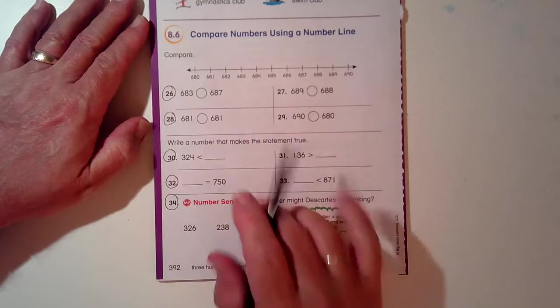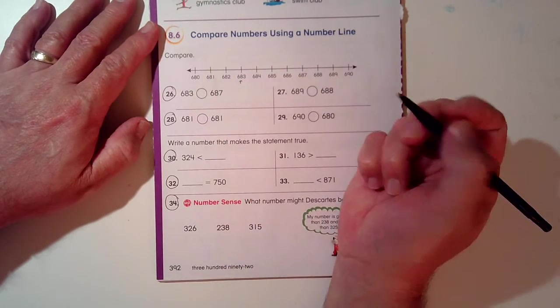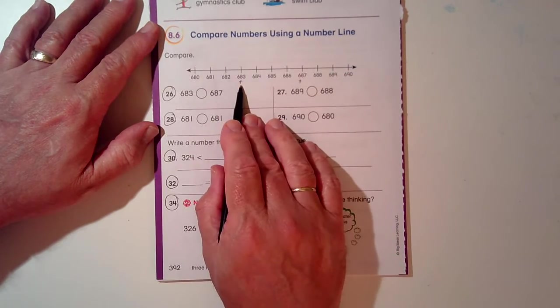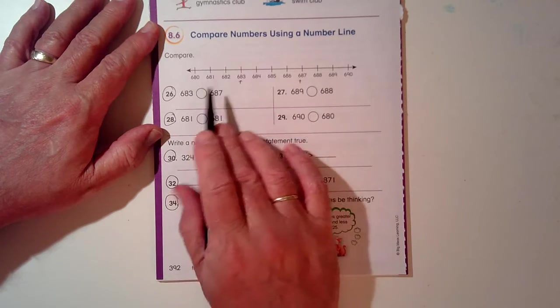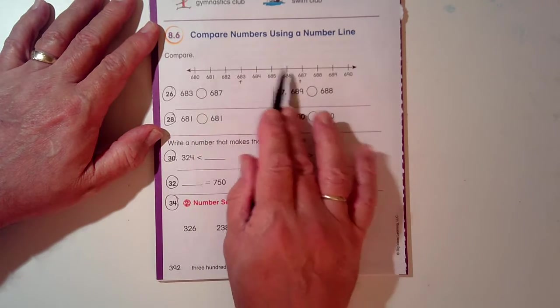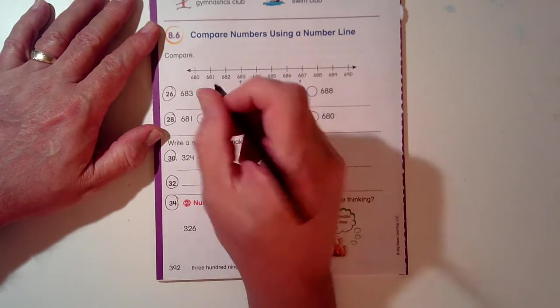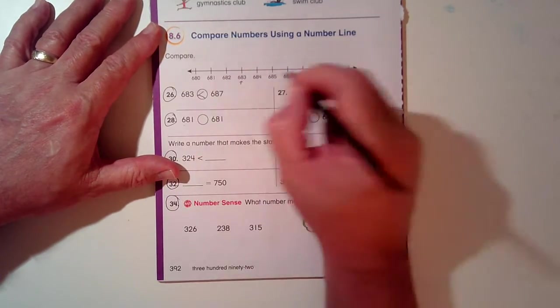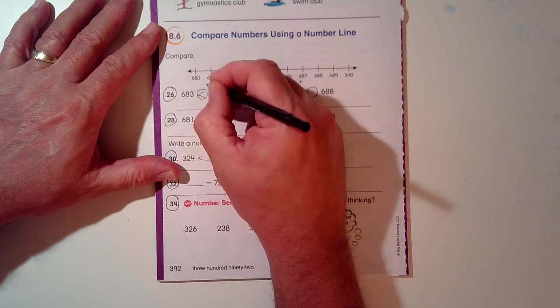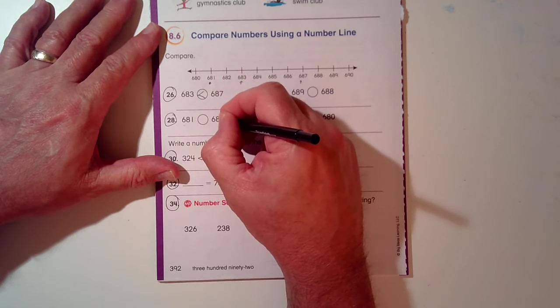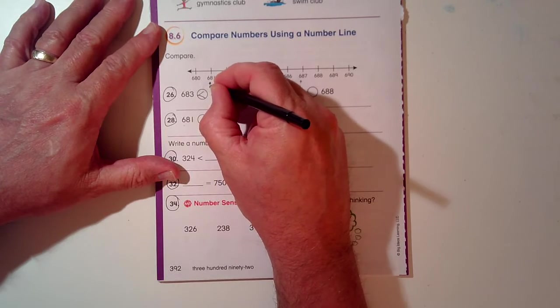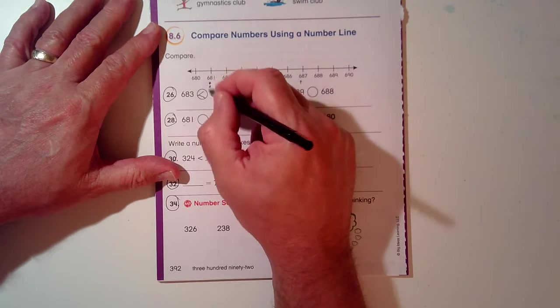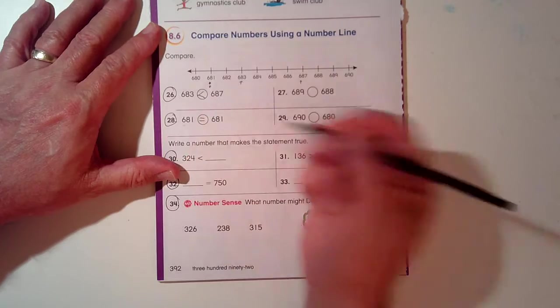Problem 26. 683, that's my first number, and 687. I need to know where this is compared to this number. So, 683 is to the left of 687, so I know that is less than. This one, 681, there it is. And what's the other? 681. It's not on the left. It's not on the right. It's the exact same number. And when they're the exact same number, it's an equal sign.